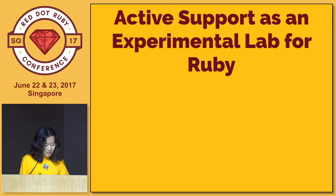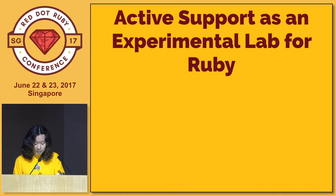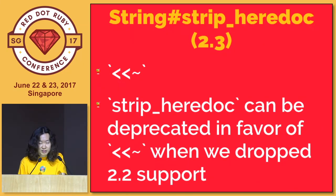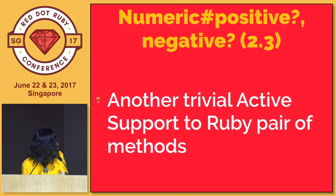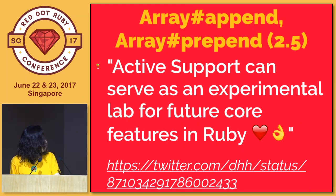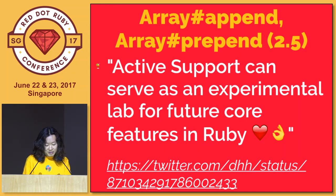Finally, I'd like to talk about some methods that were originally implemented in ActiveSupport and then ported into Ruby: Object#try got a new parallel in Ruby, strip heredoc also got a new parallel, numeric positive? and negative?, array append and prepend. And as DHH stated on Twitter: ActiveSupport can serve as an experimental lab for future core features in Ruby.